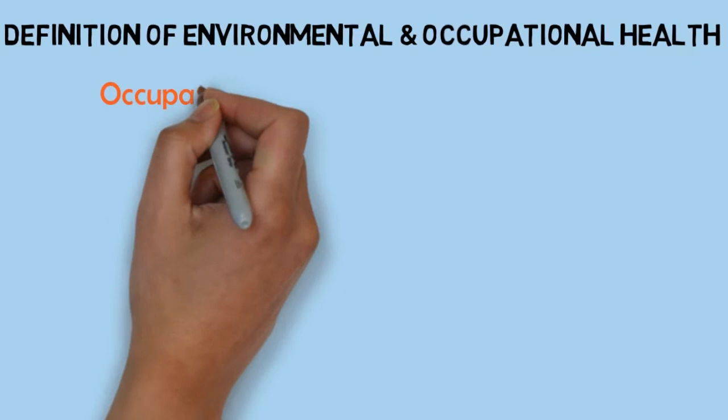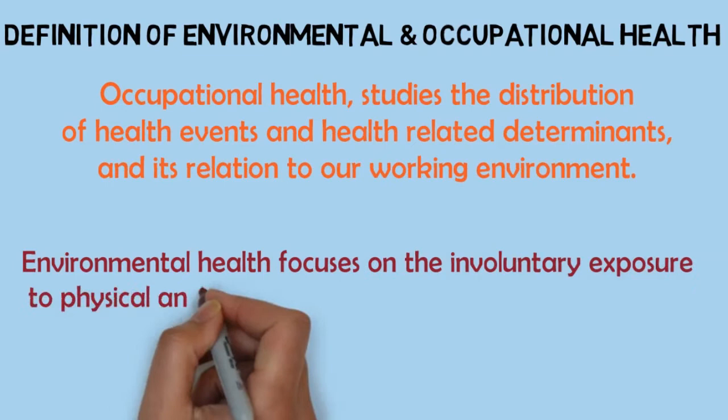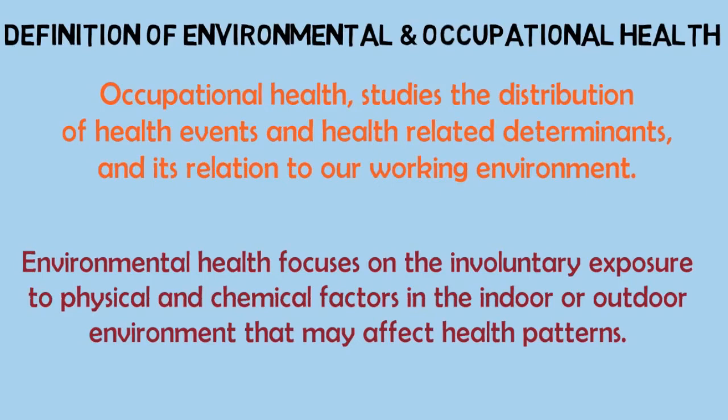Let us give a definition to what environmental and occupational health is. Occupational health studies the distribution of health events and health-related determinants and their relation to our working environment. While environmental health focuses on the involuntary exposure to physical and chemical factors in the indoor or outdoor environment that may affect health patterns.